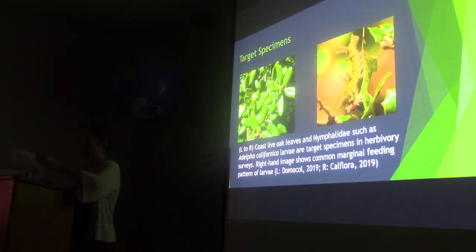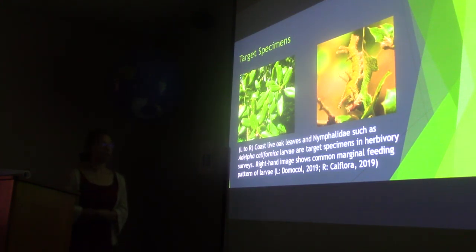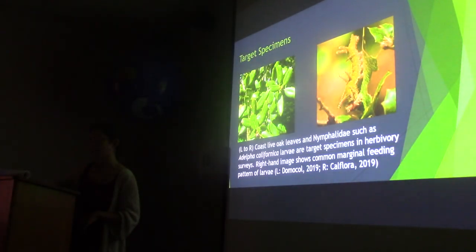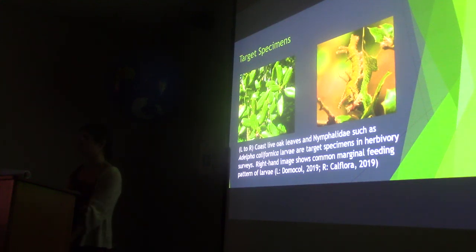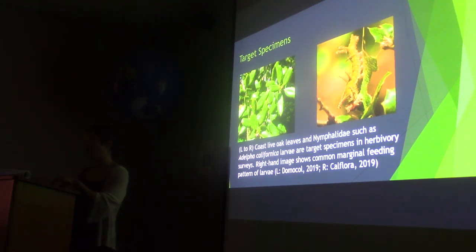The table also lists the 30-year annual average, including historic averages and projections reflecting conditions expected by end of century. This slide represents the target specimens: coast live oak and Lepidoptera larvae were the focus of the study. The right-hand image highlights the marginal feeding patterns I looked for in each herbivory survey, and the photo shows the type of oak sampled at each elevation point.